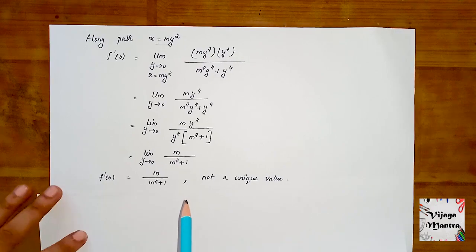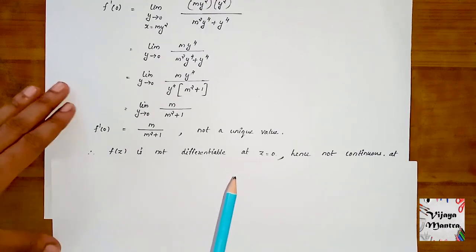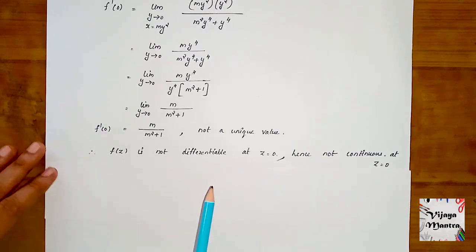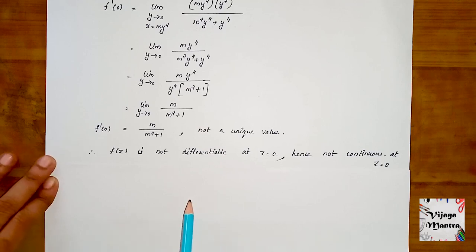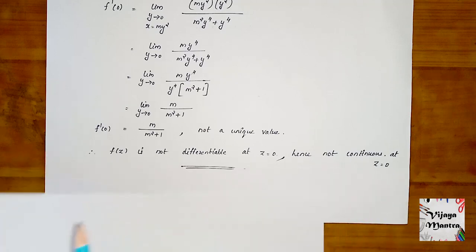When the limit depends on the path, that means the limit does not exist. If the limit does not exist, the condition is not satisfied. The function is not differentiable at the point z = 0, and hence the function is not continuous at the point z = 0. Thank you.